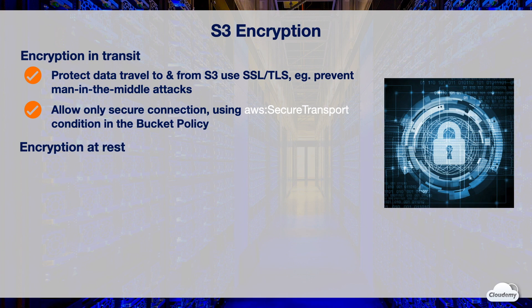Encryption at rest means data is encrypted while it's stored in S3. When you store data in S3 without encryption, anyone who has access to the S3 bucket can see the information.